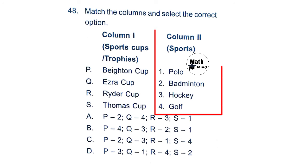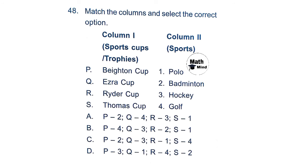Question 48: Match the columns — Sports Cups and Trophies. P: Baton Cup — Hockey. Q: Ezra Cup — Polo. R: Ryder Cup — Golf. S: Thomas Cup — Badminton. Option D is correct: all matches are correct.